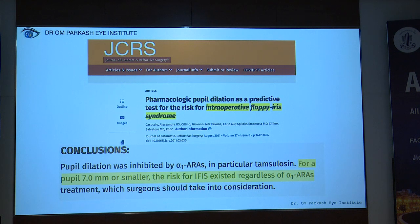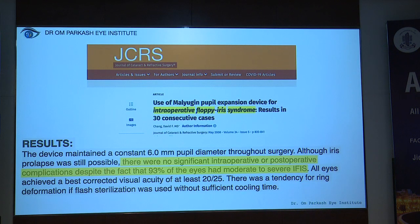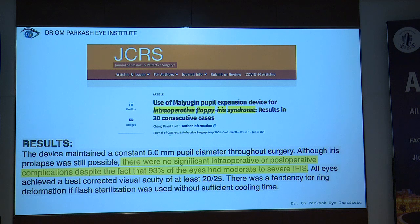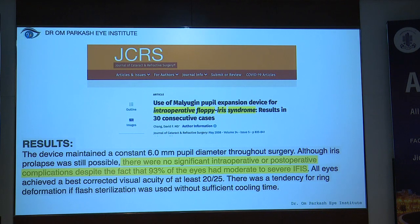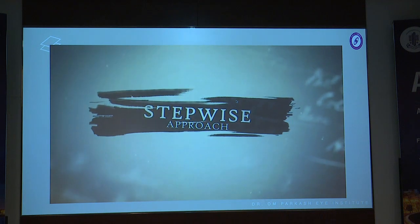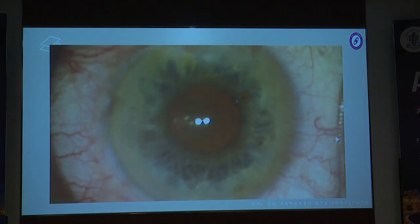The predictive test for risk of intraoperative floppy iris syndrome in patients using alpha-1 antagonist drugs: any pupil that is seven millimeters or less is predisposed. Regarding the use of Malyugin ring or the Suturex B-hex ring in IFIS — it maintains a 6mm pupil, but importantly, there is still IFIS in 93% of patients. There are no significant intraoperative or postoperative complications. This video is a stepwise approach in a blue iris patient on Tamsulosin for more than 15 years with maximum pupillary dilation of 4.2mm.